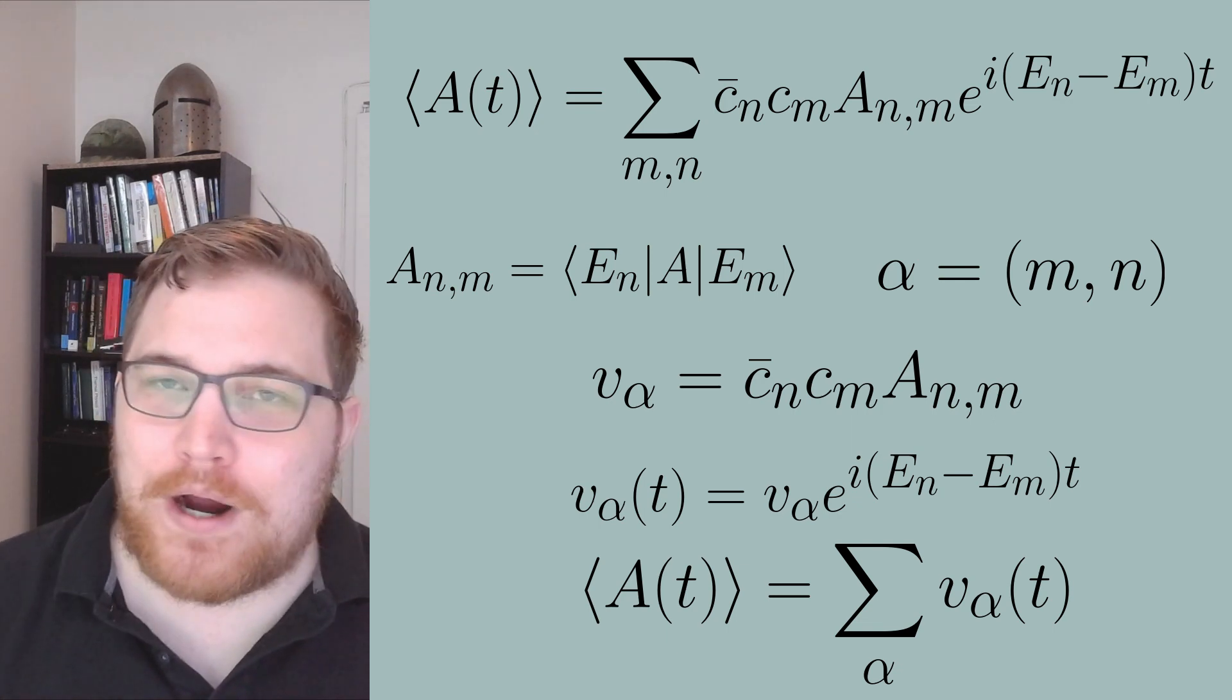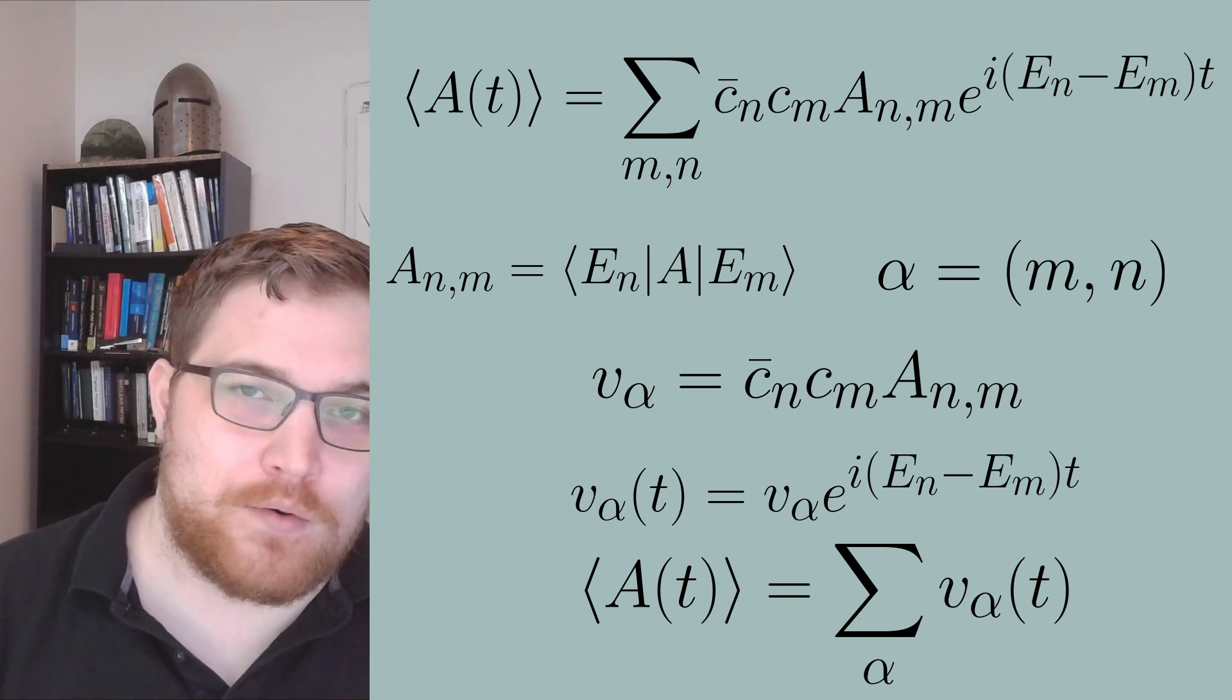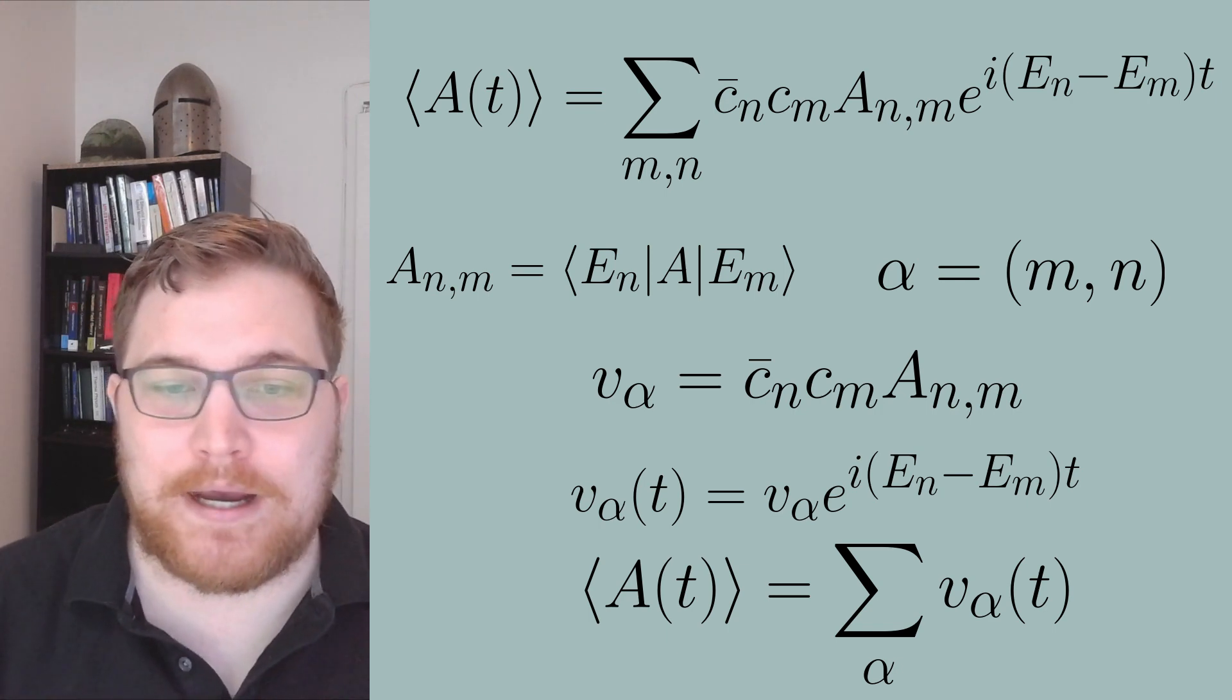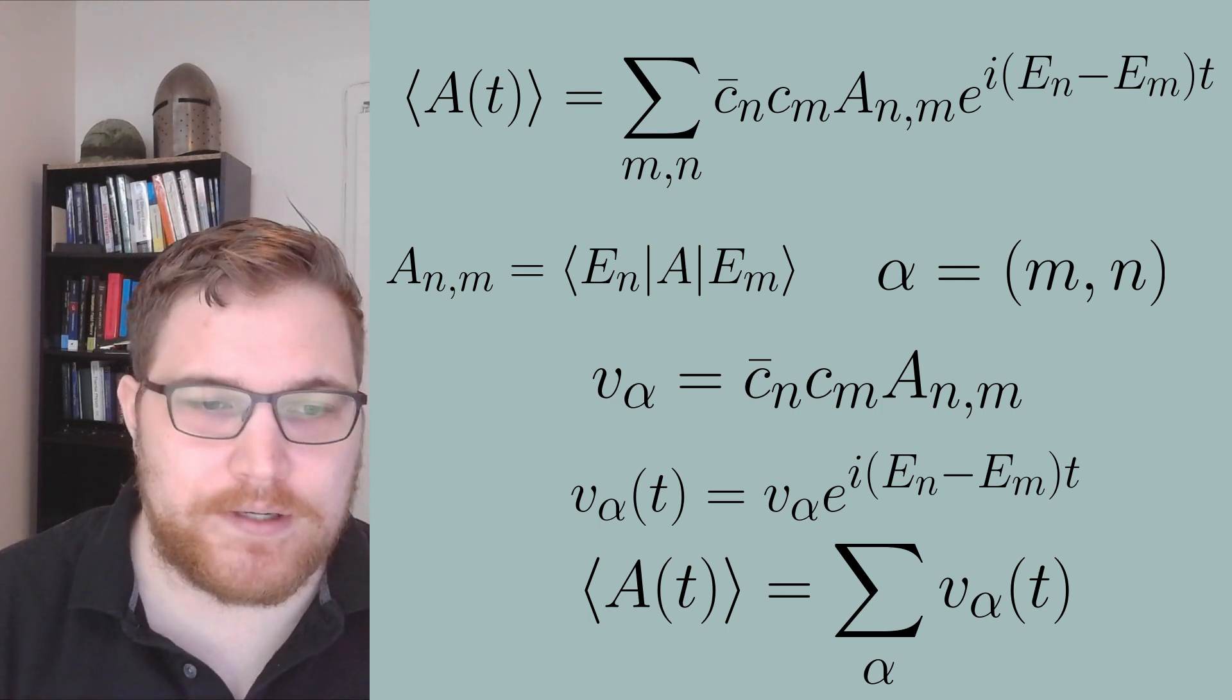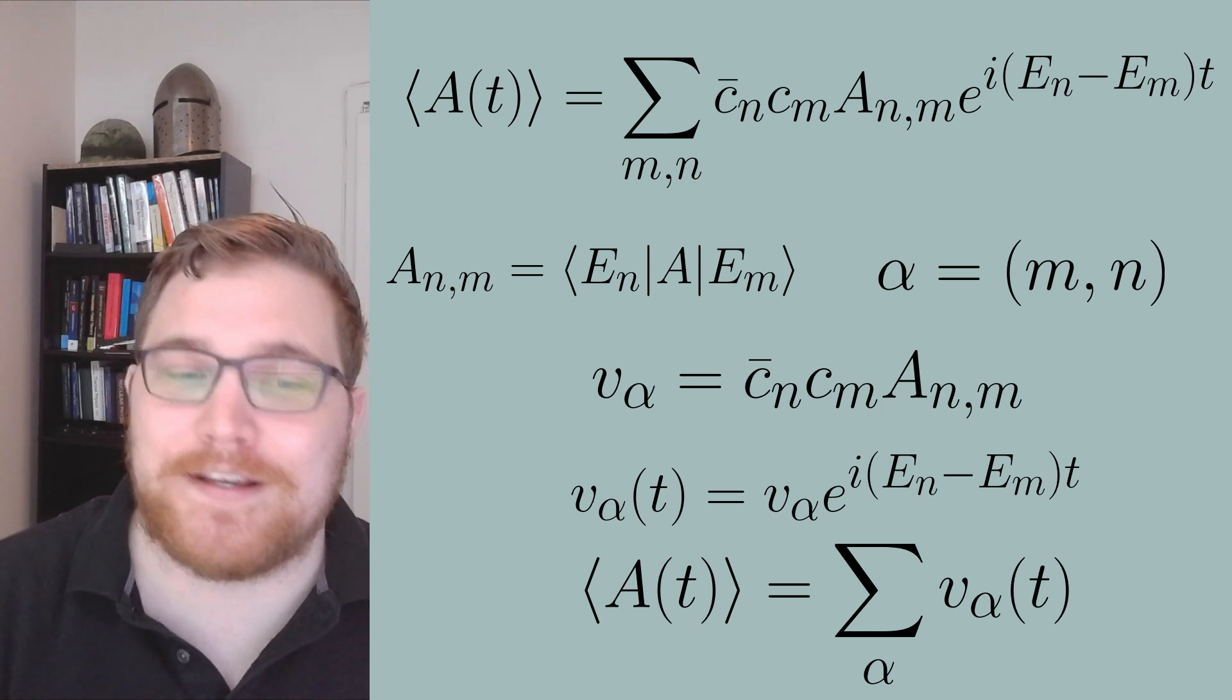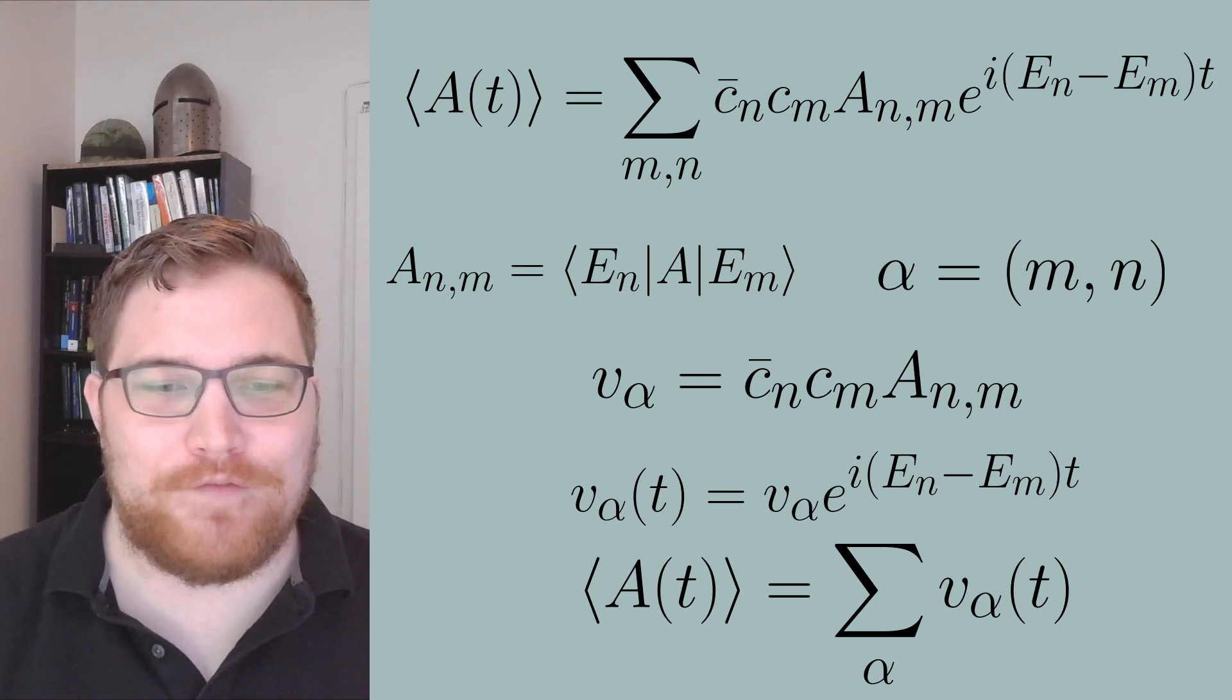So just for fun, let's actually watch one of these big sums in action or instead we're going to track each individual v alpha point in time. So let's get back to our example with our spin chain and our observable A. In this case, we will only show the complex numbers rotating in the complex plane for 18 spins.